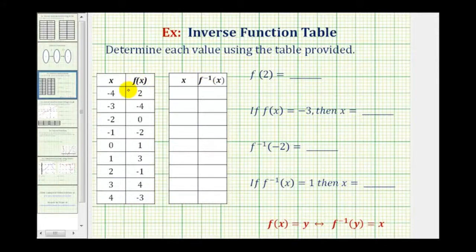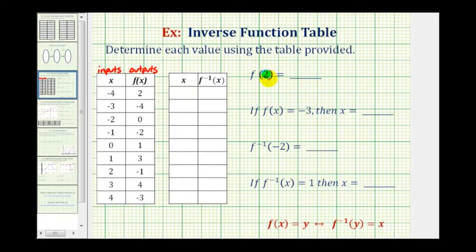I'm going to use the table of values for f of x to determine the values on the right. Remember, the x values are the inputs and the function values or y values are the outputs. To evaluate f of 2, we recognize that 2 is the input or x value for function f. Looking at the table for an input of 2, the output is negative 1, therefore f of 2 equals negative 1.